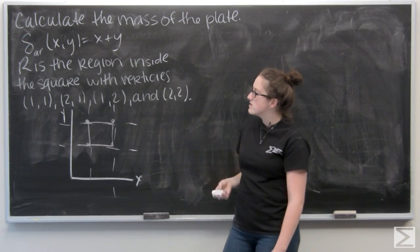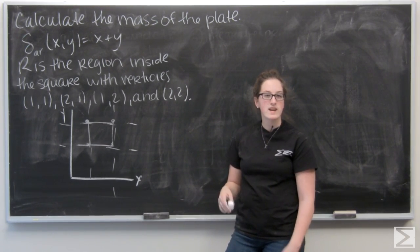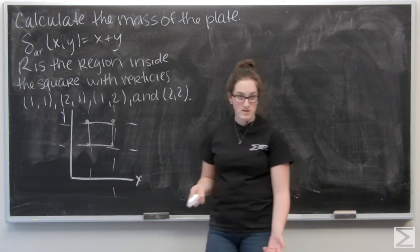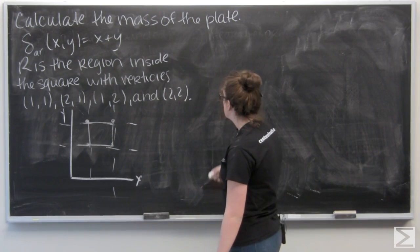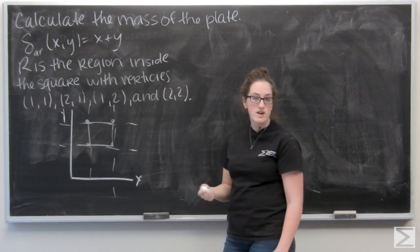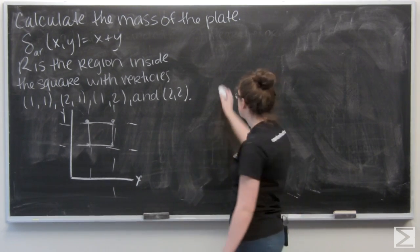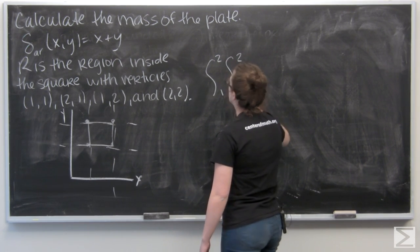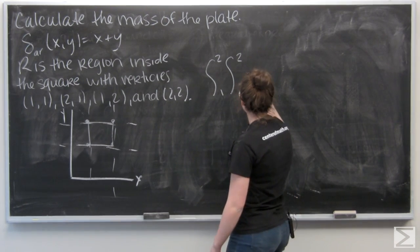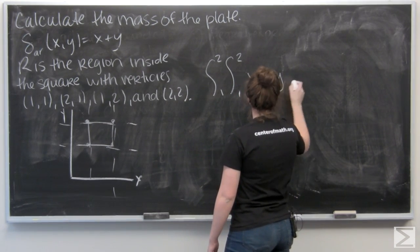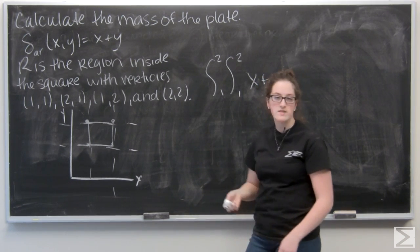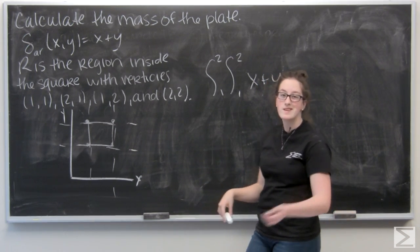So to find the area, to find the mass of the plate, I want to integrate the area density over the area of the region. So I already know my bounds, x and y both go from 1 to 2. And I just want to integrate that function, so I have x plus y. And then it doesn't really matter which order I integrate in. All my bounds are constants. I'm going to go dy and then dx.